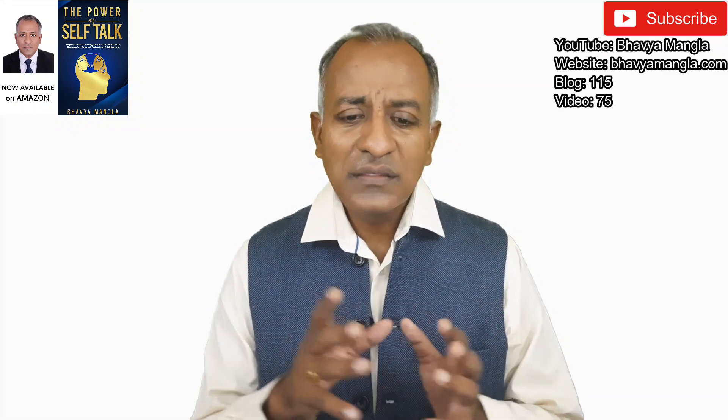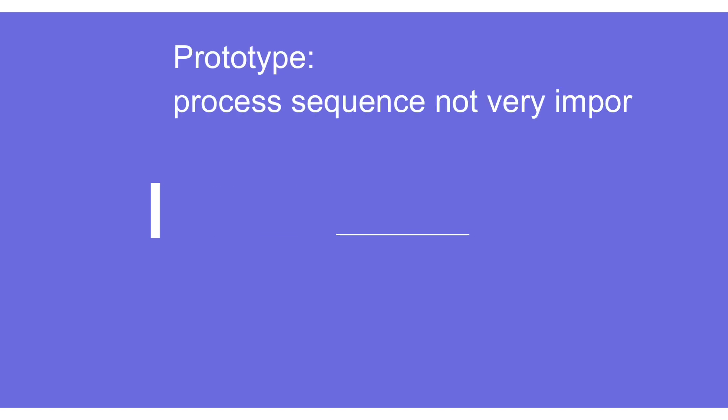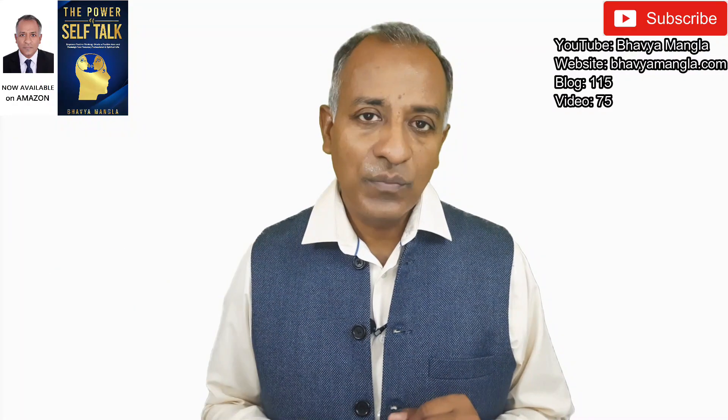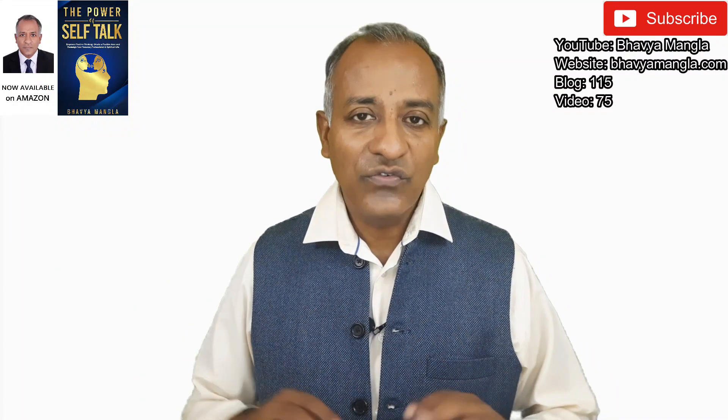In the prototype control plan, the process sequence is there but it is not fixed because it can change from time to time. In the pre-launch control plan, broadly the process sequence — how the material will flow from beginning to end — is fixed, but it can change during trial production. In the production control plan, everything is frozen and done as per customer approval.